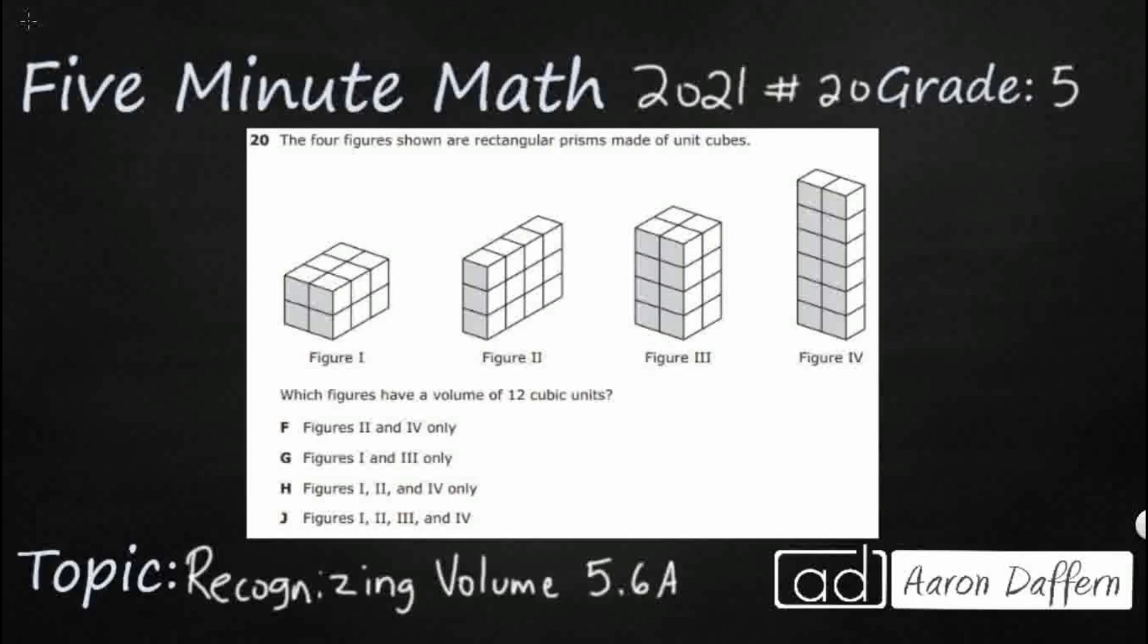So we have four rectangular prisms. They are made of cubes. We need to find a volume of 12 cubic units. So how do we find volume?